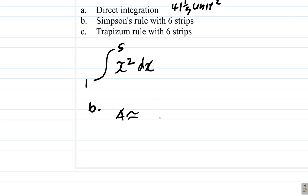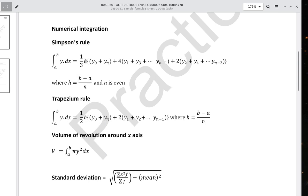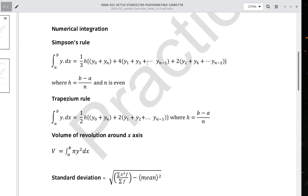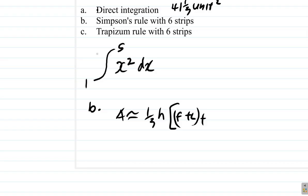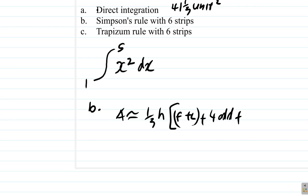The area is going to be approximately equal to 1 third H, first plus last in brackets, plus 4 times odd ordinates plus 2 times even ordinates. 1 third H.